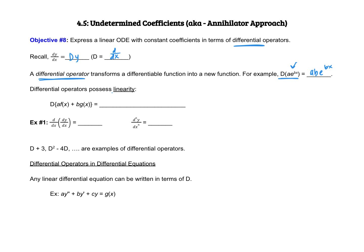It's important to know that differential operators possess linearity. If I'm taking the derivative of a sum, I can pull out a constant and take the derivative of f(x), and separately pull out a constant and take the derivative of g(x). Some quick examples: D² gives the second derivative of y; D^n gives the nth derivative. Operators like D+3 or D²−4D are also differential operators.